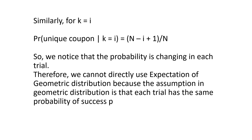We can now generalize this for the ith trial. The probability of finding a unique coupon in the ith trial is given by n minus i plus 1 over n. So we notice that the probability is changing in each trial, and we know that in a geometric distribution the probability of success in each trial is the same.